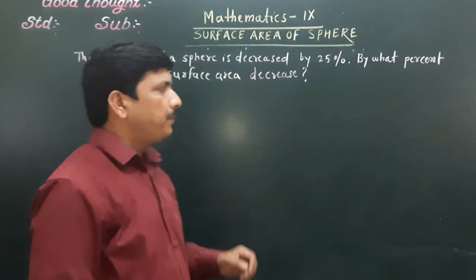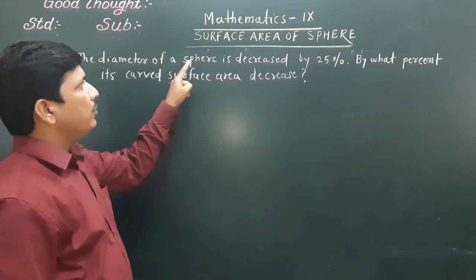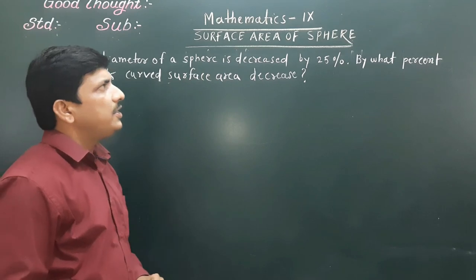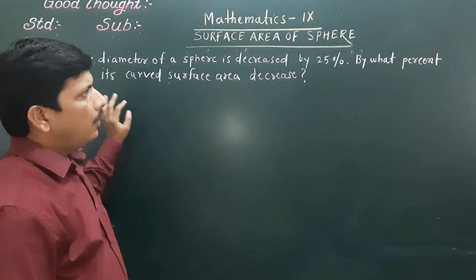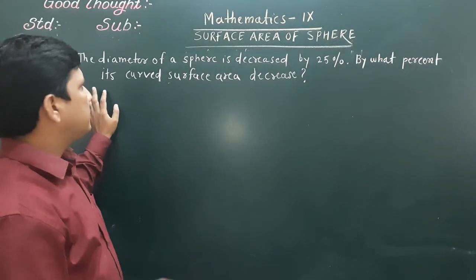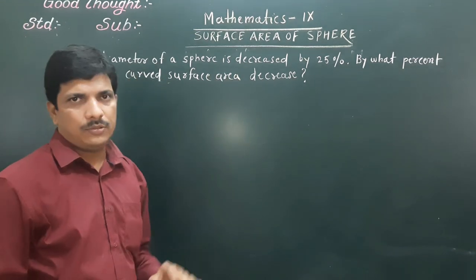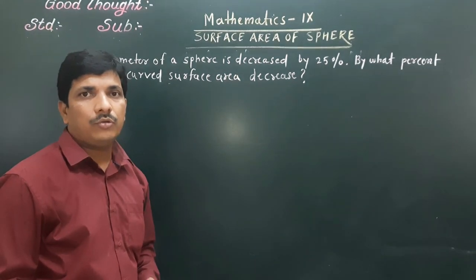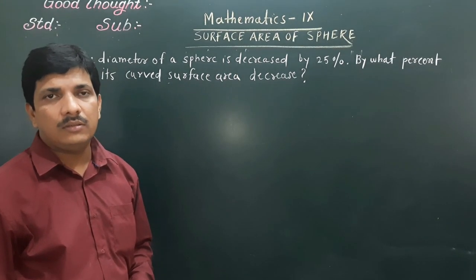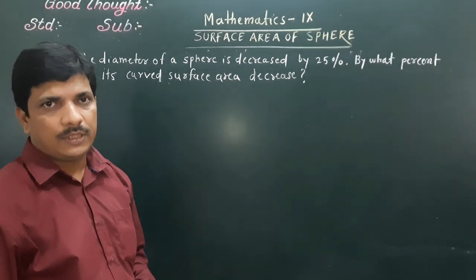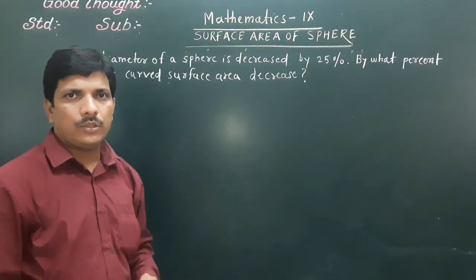The next problem: the diameter of a sphere is decreased by 25%. By what percent is its curved surface area decreased?